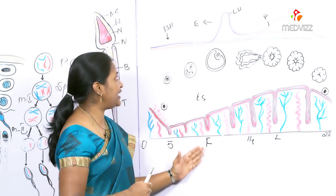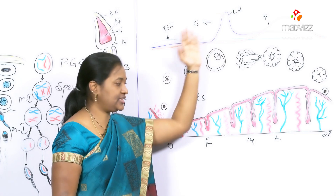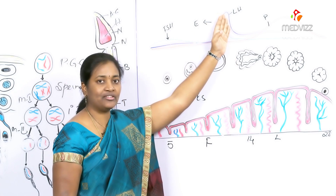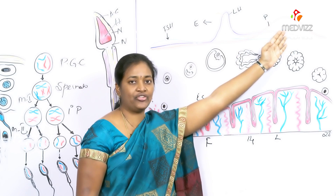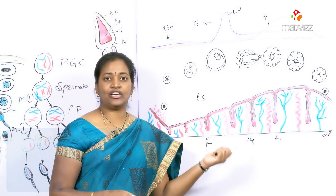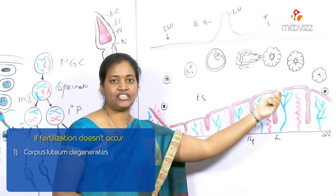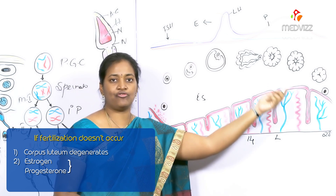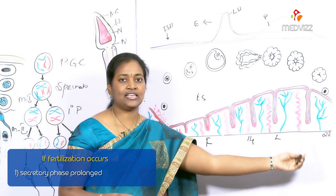During the follicular phase, there are high levels of follicle-stimulating hormone, and estrogen levels gradually increase. At the time of ovulation, when the ovum is released, LH levels are at their highest. During the luteal phase, progesterone hormone increases, coming from the corpus luteum inside the wall of the ovary. If fertilization does not occur, the corpus luteum degenerates and forms the corpus albicans, estrogen and progesterone levels fall, and the next menstrual cycle is repeated.